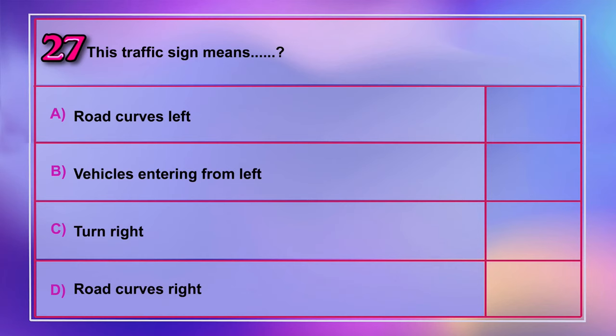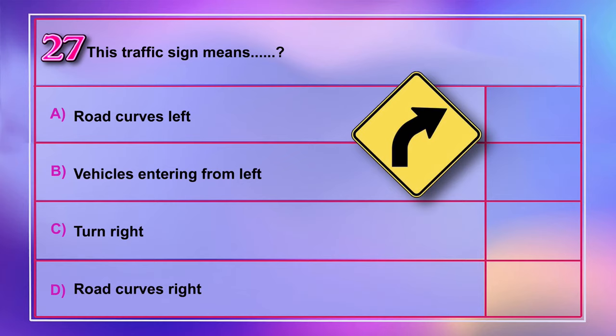Question number 27: This traffic sign means A) road curves left, B) vehicles entering from left, C) turn right, D) road curves right. Correct answer is D: road curves right.